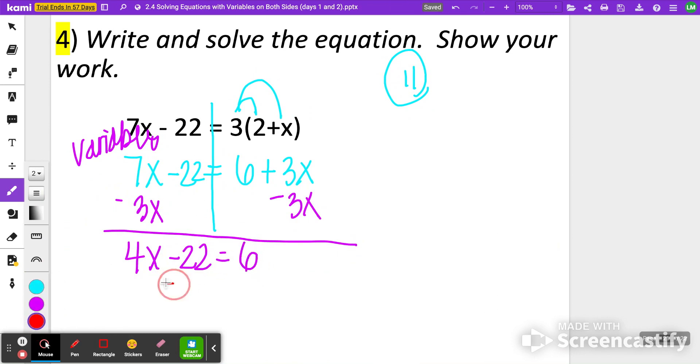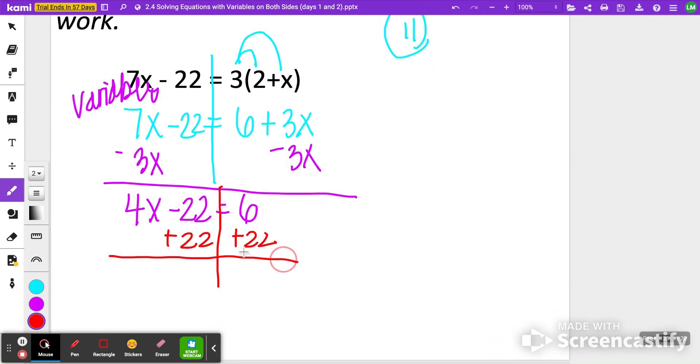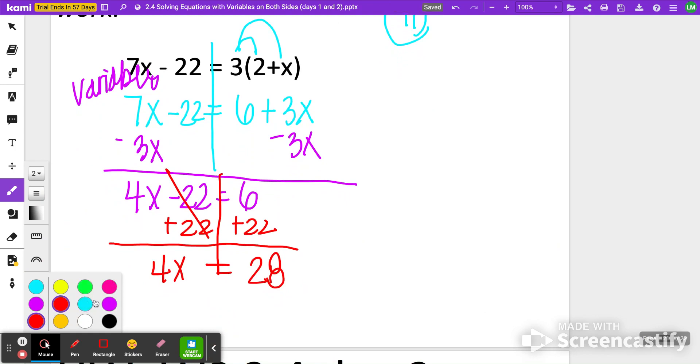Then I will add 22 to both sides. Losing my line here. Sorry about that. Minus 22 plus 22 cancels out. So I got 4x is equal to 6 plus 22. That's 28. And then finalizing my steps, I will divide both sides by 4. 4x is equal to 7 for my last example.